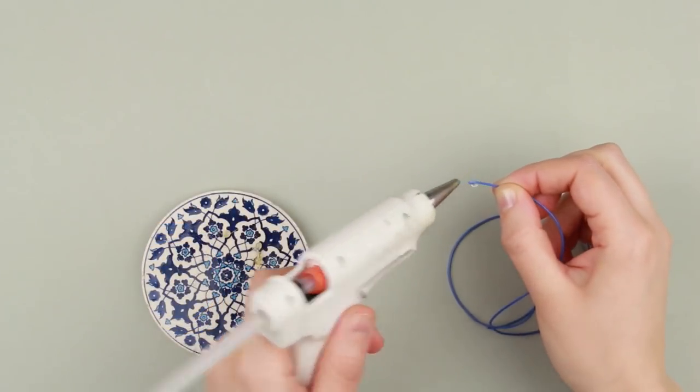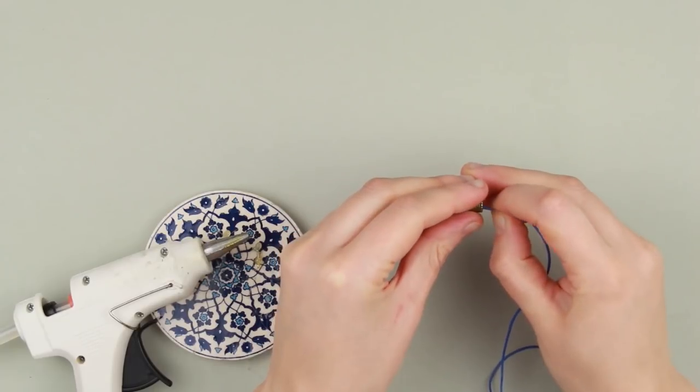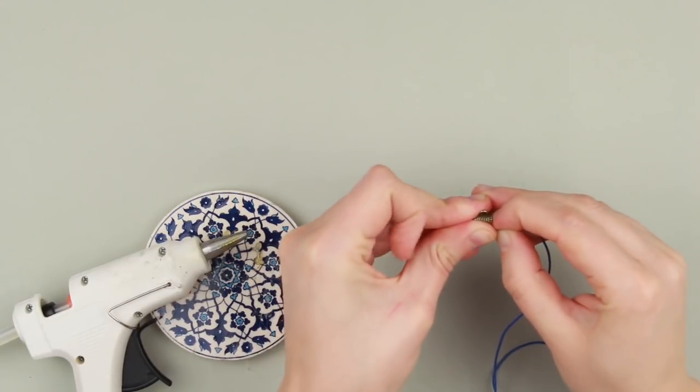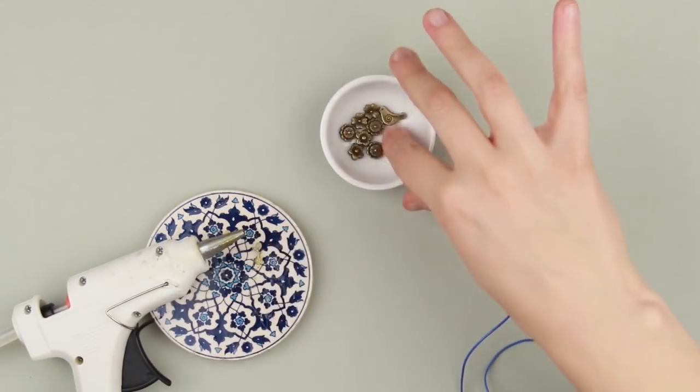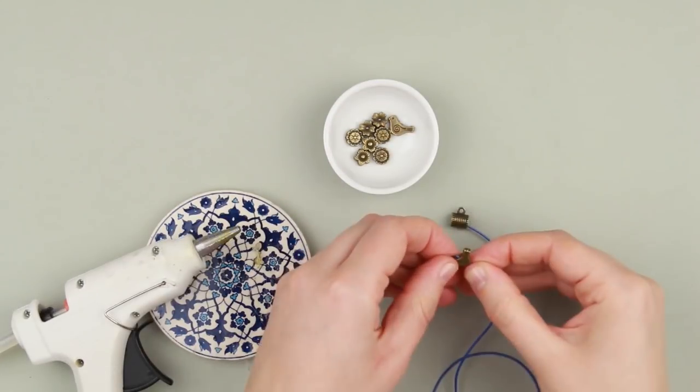Hot glue the cord end. Pass it through the tube connector and press over to attach well. Thread a charm and pull up nearly to the end.